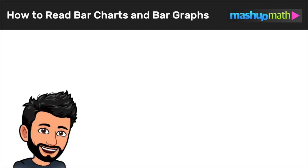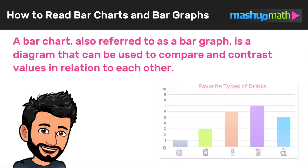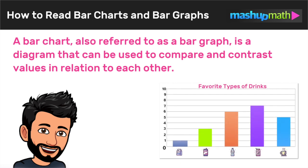Hey everyone, welcome back to Mashup Math. Anthony here, and welcome to this lesson on how to read bar charts and bar graphs. A bar chart, which is also referred to as a bar graph — they both mean the same thing — is a diagram that can be used to compare and contrast values in relation to each other.